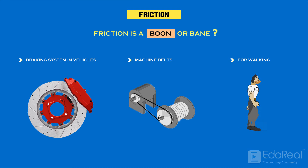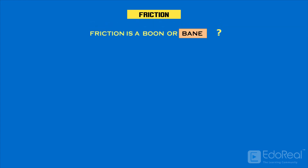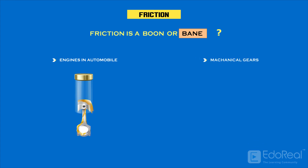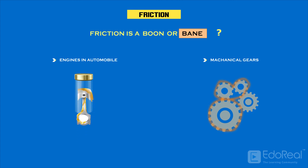So, frictional force plays a very big role in our daily lives. There are some situations where we don't want friction, such as engines in automobiles that need lubrication oil between the cylinder and piston to avoid friction. And in mechanical parts like gearboxes, we use lubrication to avoid friction.